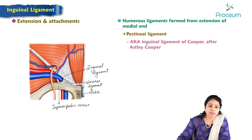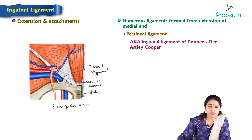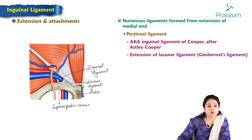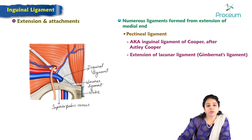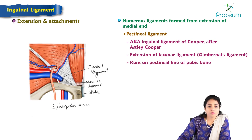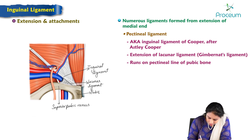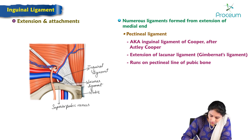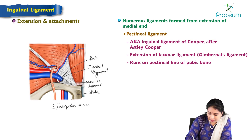The next ligament is the pectineal ligament, sometimes known as Cooper's ligament or the inguinal ligament of Cooper, named after Astley Cooper. It is an extension of the lacunar ligament and runs along the pectineal line of the pubic bone. The extension of the lacunar ligament along this pectineal line constitutes the ligament of Cooper, otherwise called the pectineal ligament.